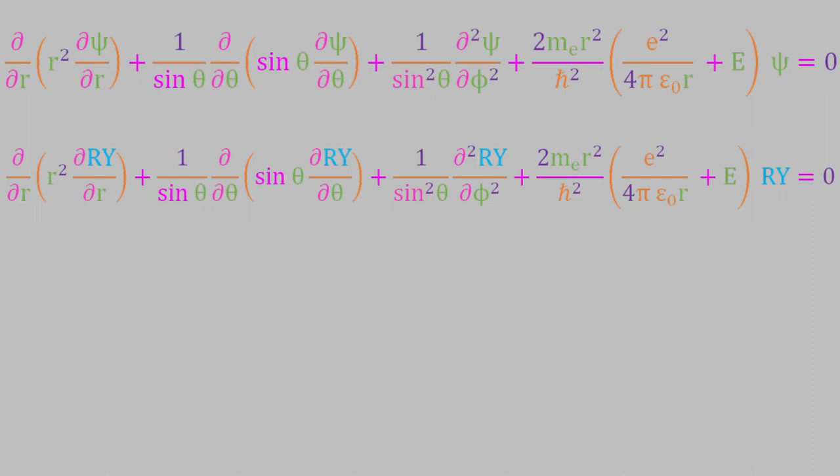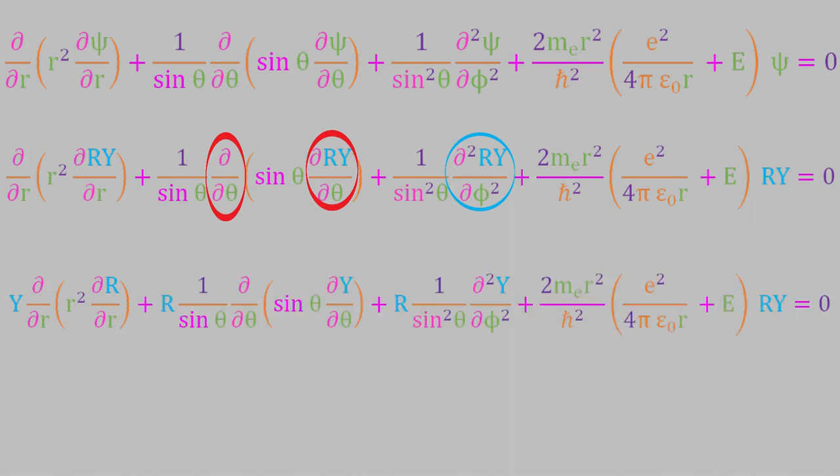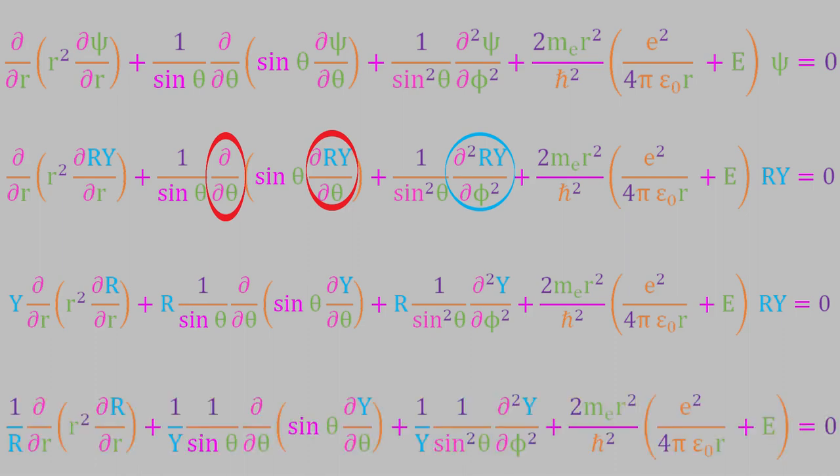Now let's simplify this. In the first term, we're taking the derivative with respect to r. But the function capital Y doesn't contain the variable r, so we can factor y out of the differential. In the same way, the derivatives in the second and third terms are taken with respect to theta or phi. So we can factor the function capital R out of those differentials. Finally, let's divide everything by the functions capital R times capital Y. When we do that, here's what we get.